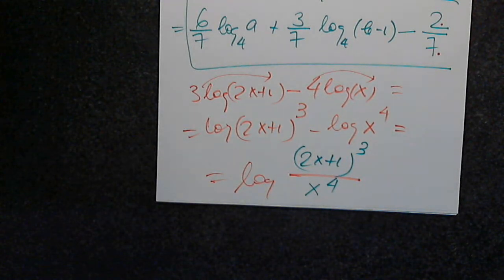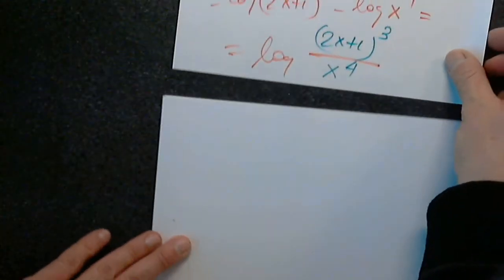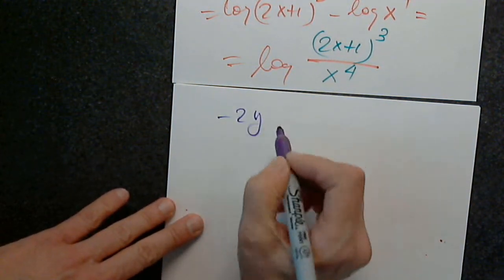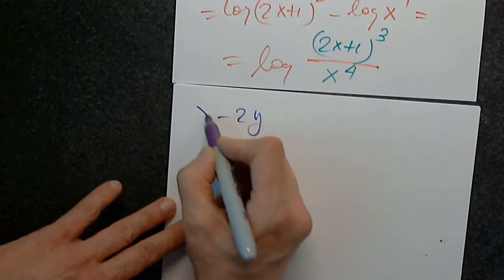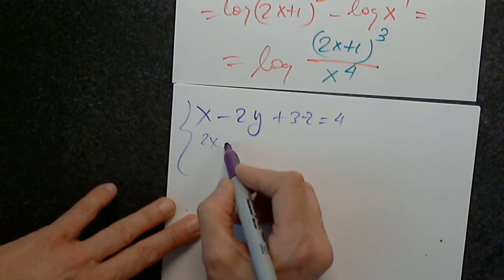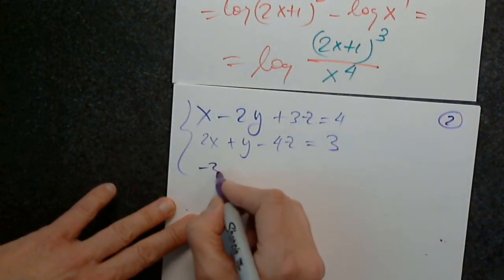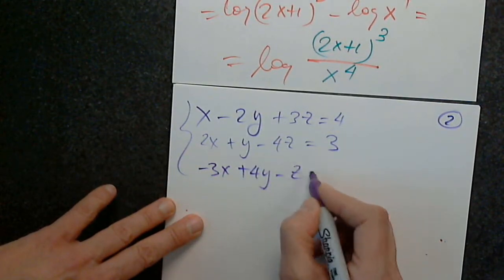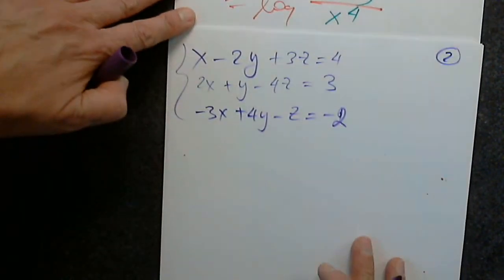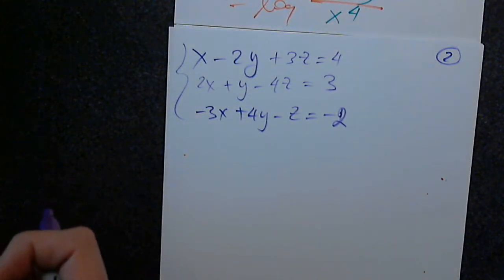We have to go back to Gaussian elimination. A student provides a system: x minus 2y plus 3z equals 4, 2x plus y minus 4z equals 3, and minus 3x plus 4y minus z equals negative 2. We want to show how to solve this system not using Gauss-Jordan, but using Gaussian elimination with back substitution.